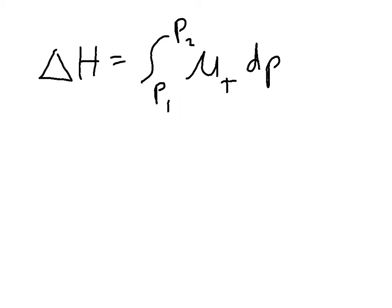And mu T might be a function of pressure or it might be constant. In any case, if we have mu T as a function of pressure, we could integrate it. If it's constant, we could integrate it. Now why would this matter?